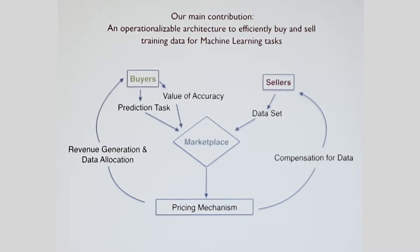So what is our main contribution? Our main contribution is what we believe to be an operationalizable architecture to efficiently buy and sell trading data for machine learning tasks. There are going to be three big players in this market. First are buyers who come in with some sort of prediction task and how much they value accuracy. They're going to have sellers who are selling data sets, they can make money from it. And they have a marketplace which is tasked with pricing all the data that's being sold, deciding what data to allocate to buyers, how much revenue to generate, and then based on some amount of money that's been collected, how would you compensate the different sellers for that?